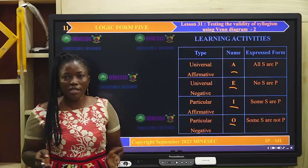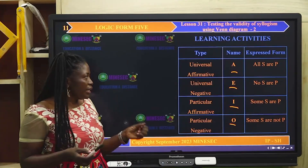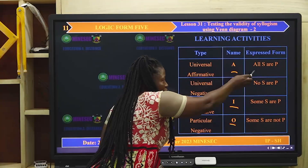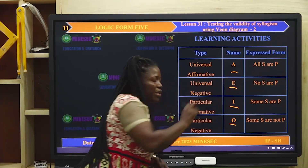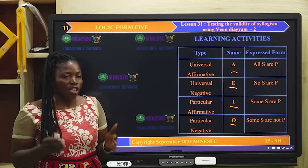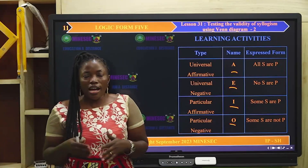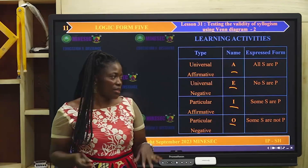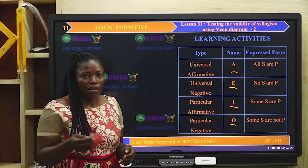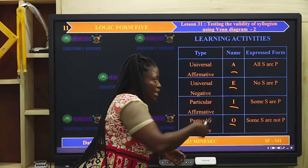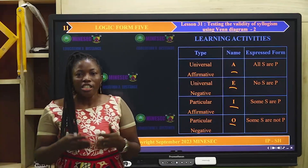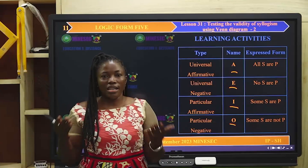The A proposition is the universal affirmative proposition. It is expressed in the form 'All S are P'. For example: All teachers are intelligent persons. The E proposition is the universal negative, expressed as 'No S are P'. For example: No cats are reptiles. We have particular affirmative propositions represented by I, expressed as 'Some S are P'. For example: Some students are learners; some teachers are wise persons.